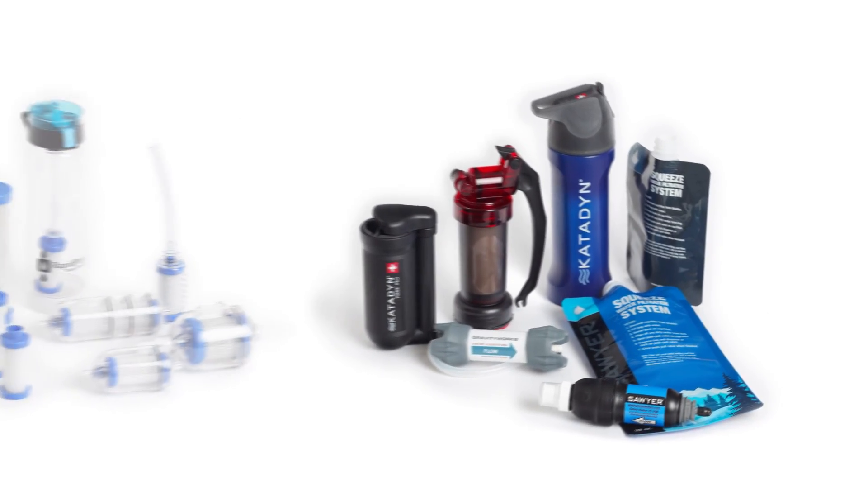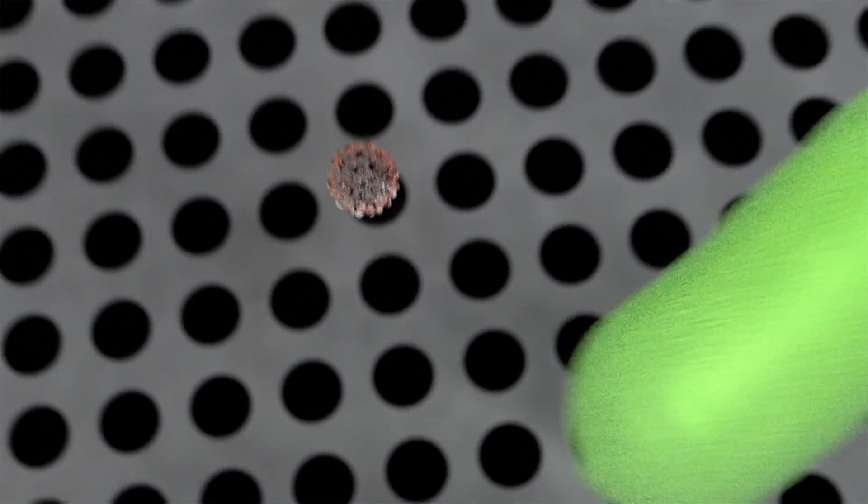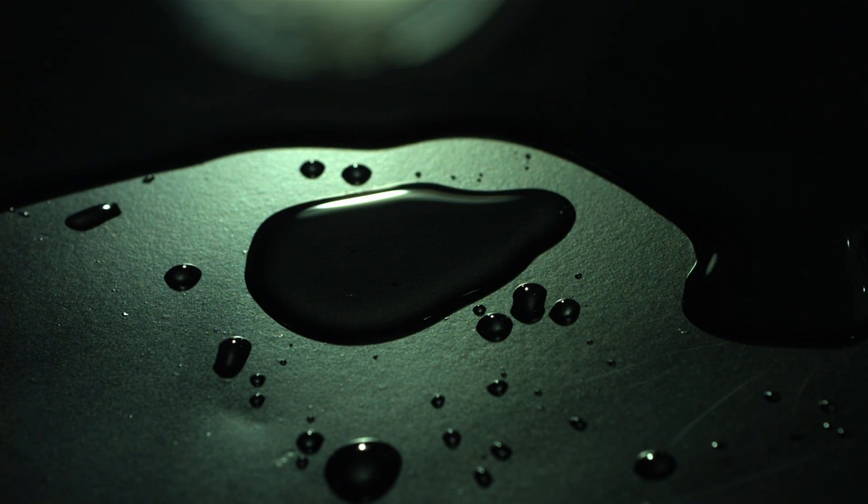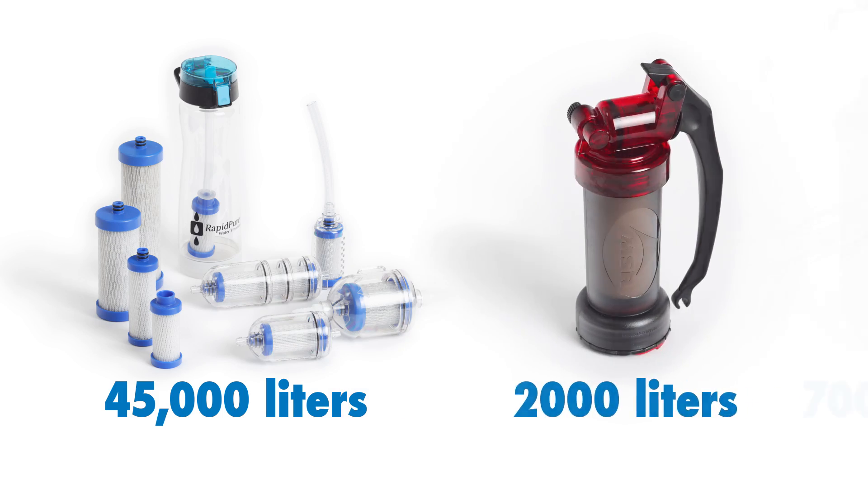Every other filter is a variation on this theme. A mesh, with holes too small for large contaminants to pass through, catches and holds them, but lets water through slowly until these pores clog up with contaminants.